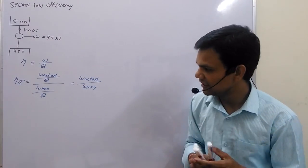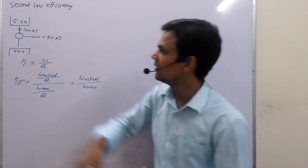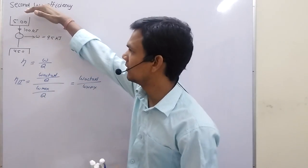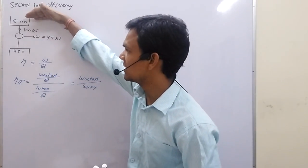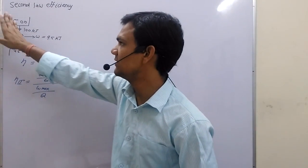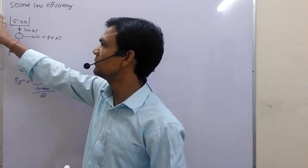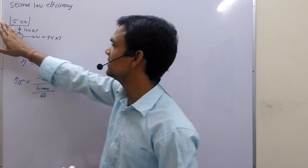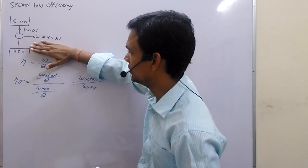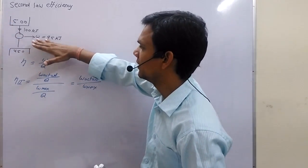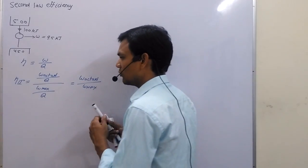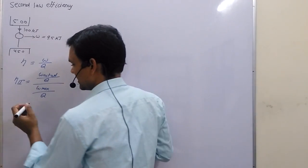To understand this, we take an example. I draw here a figure. Suppose our source is at 518 degrees Celsius and the sink is at 450 degrees Celsius. From the source we are receiving 100 kJ of energy, and this engine is doing 9.5 kJ of work.